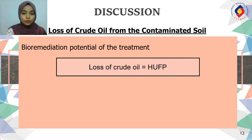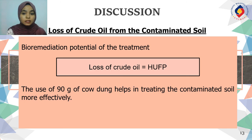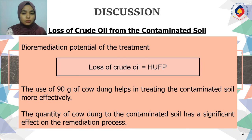Discussion on loss of crude oil is related to the HUFP, representing the bioremediation potential of the treatment. When there is an increment of HUFP, the loss of crude oil from the contaminated soil will be increased. Based on Table 3, the use of 90 grams of cow dung helps in treating the soil most effectively. Nutrients obtained from cow dung play an important role in crude oil contaminated soil treatment. Therefore, the quantity of cow dung applied to contaminated soil has a significant effect on the remediation process.